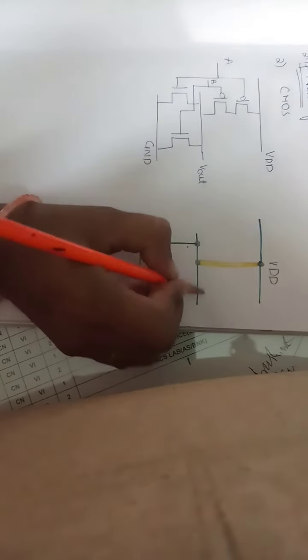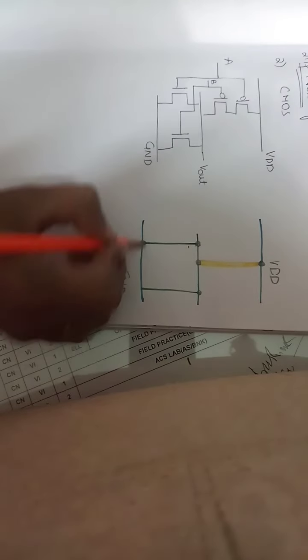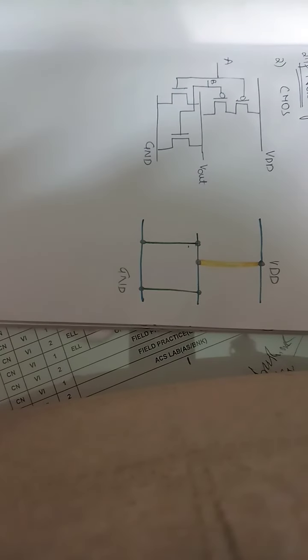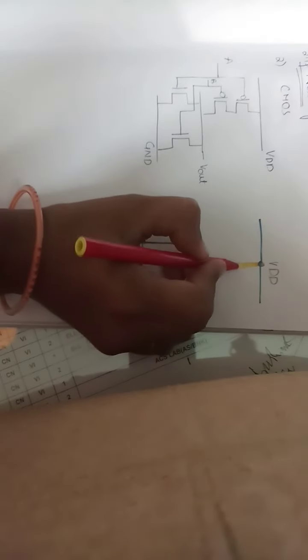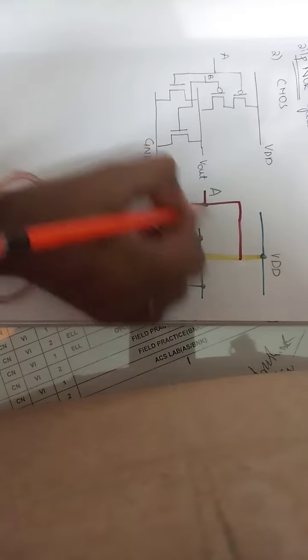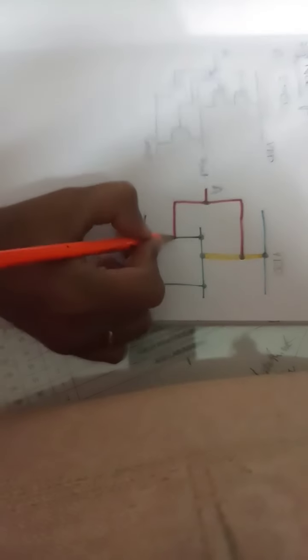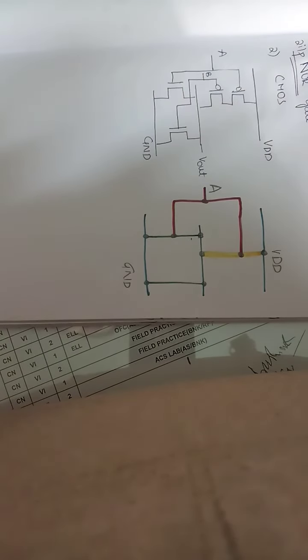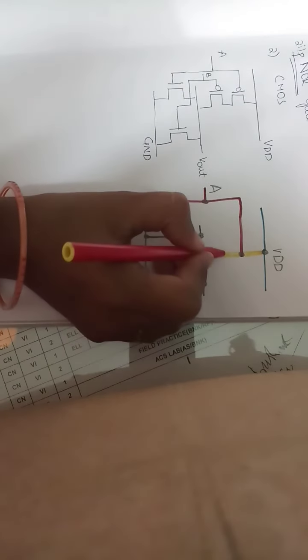Make a contact cut here. The inputs are common — take the connection like this and similarly take the connection for the other. Indicate input A with a contact cut. For the second input, take input B here as well — you have taken both inputs.